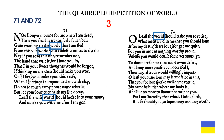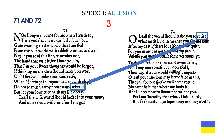We also have the quadruple repetition of world in both of these poems. Finally, we have an allusion to speech in both of them: the word rehearse in sonnet 71 and recite in sonnet 72. In order to recite something — as alluded to in sonnet 72 — you must rehearse it, as we see in sonnet 71 with my poor name rehearse. There's no way you can get out of this one — they have to be read in this order.